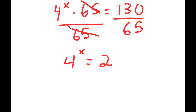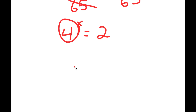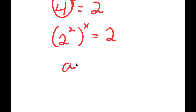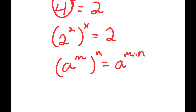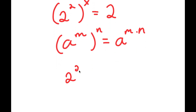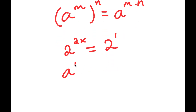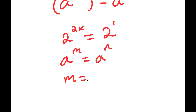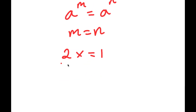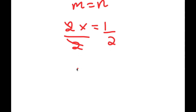From here, I'm going to rewrite 4 as 2 squared. So I have 2 squared to the power of x equals 2. Using the rule a to the power of m to the power of n equals a to the power of m times n, I get 2 to the power of 2x equals 2 to the power of 1. Since the bases are equal, 2x equals 1, and dividing both sides by 2 gives x equals one half.